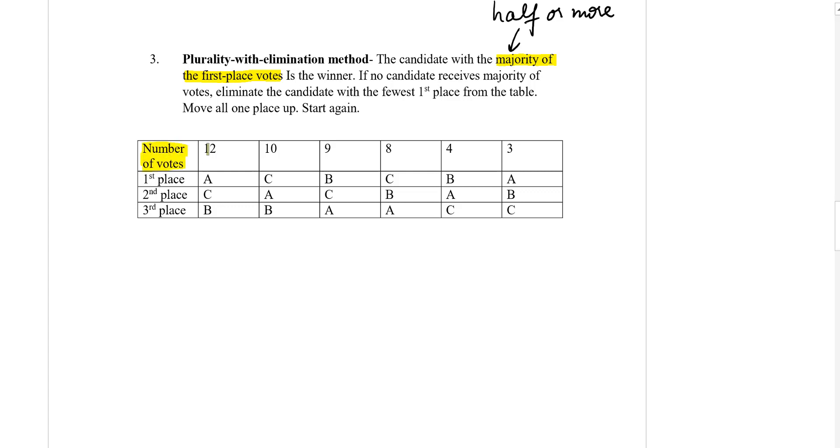Number of votes we have 12, 10, 9, 8, 4, and 3. So if we add all this up the total is 46. So to have majority of votes means 23 or more.